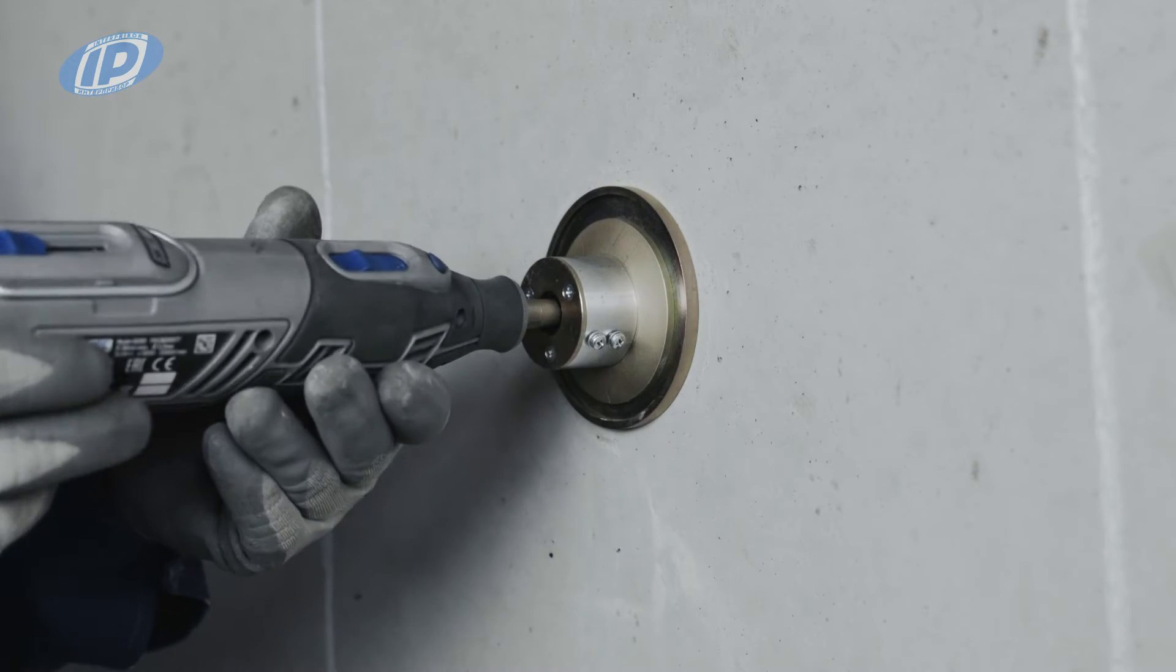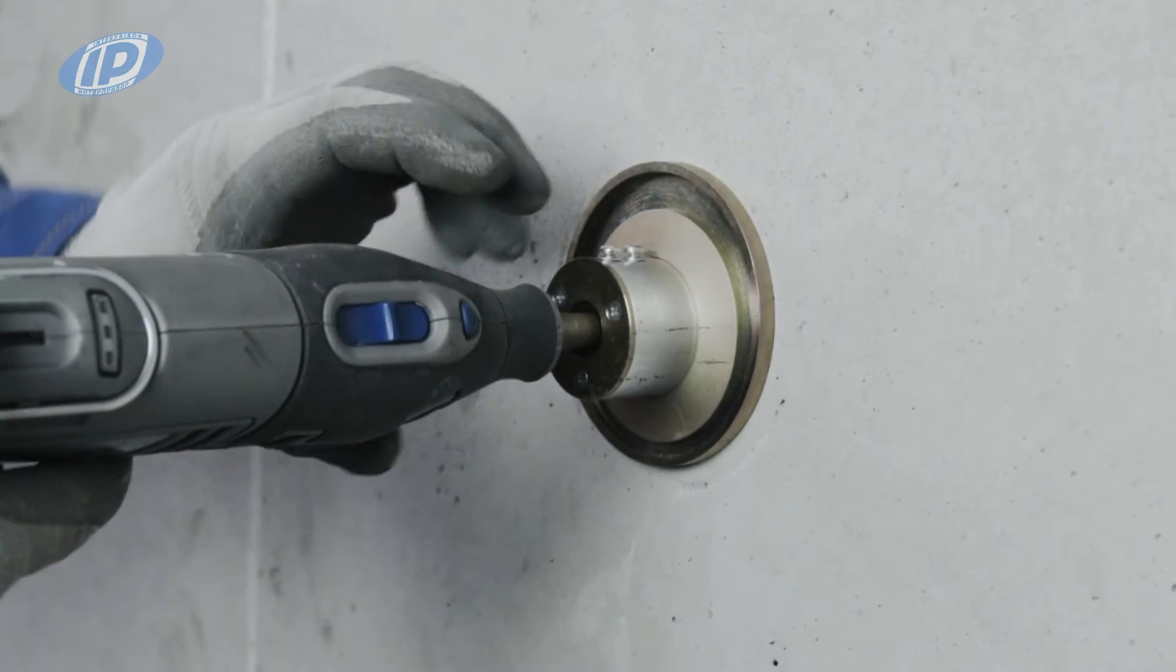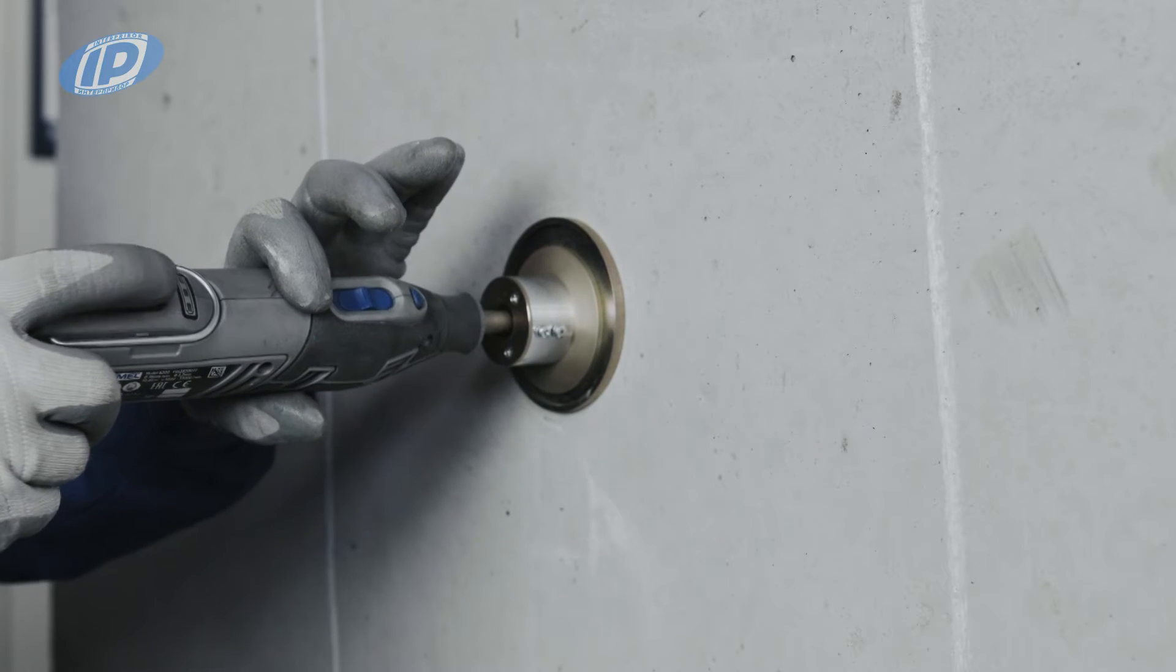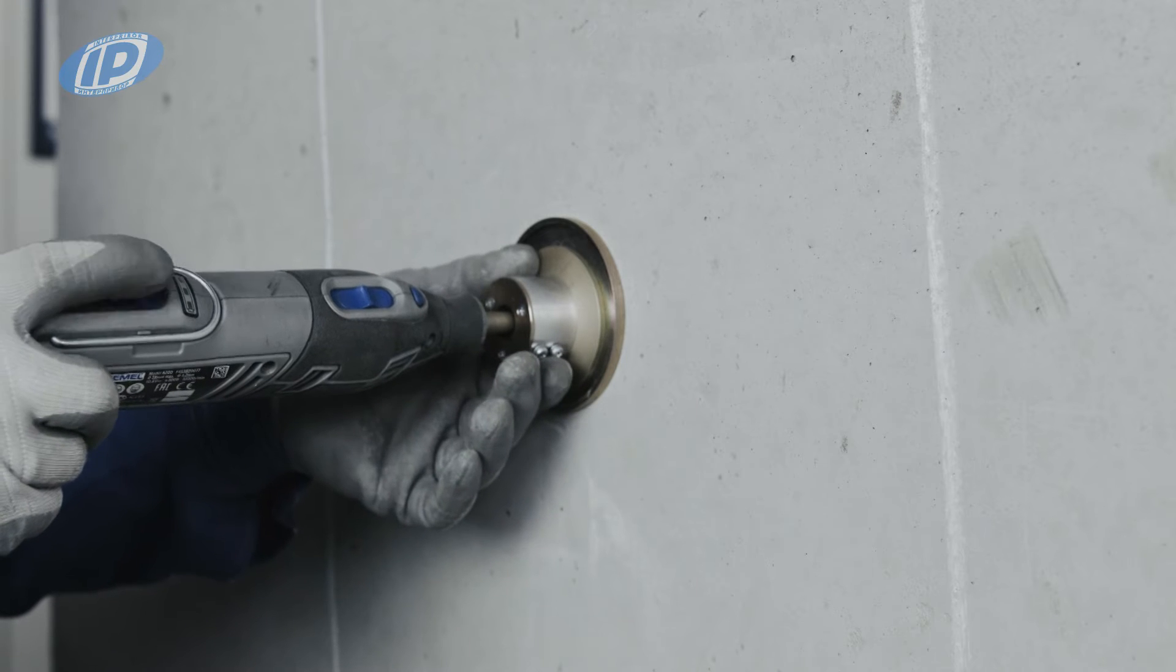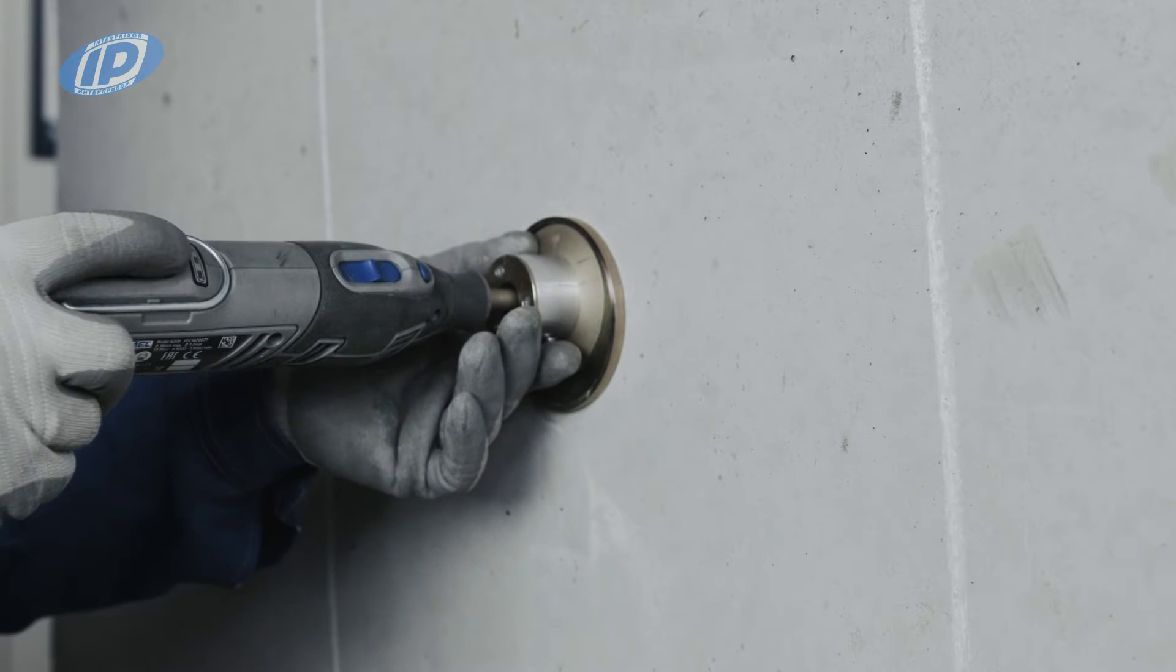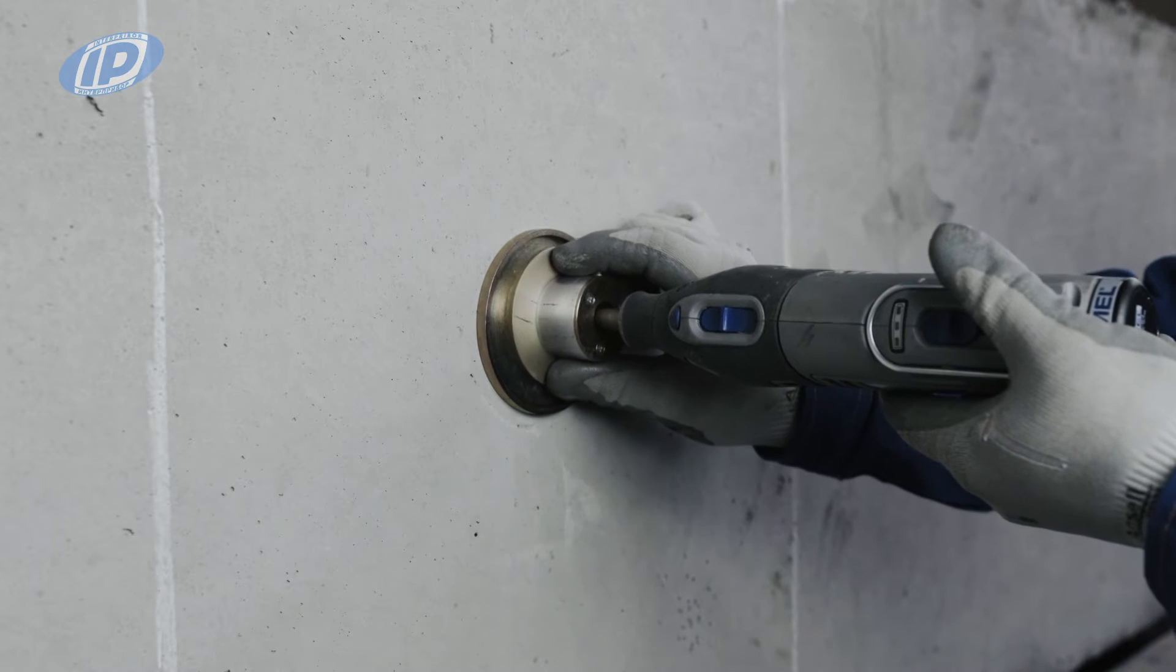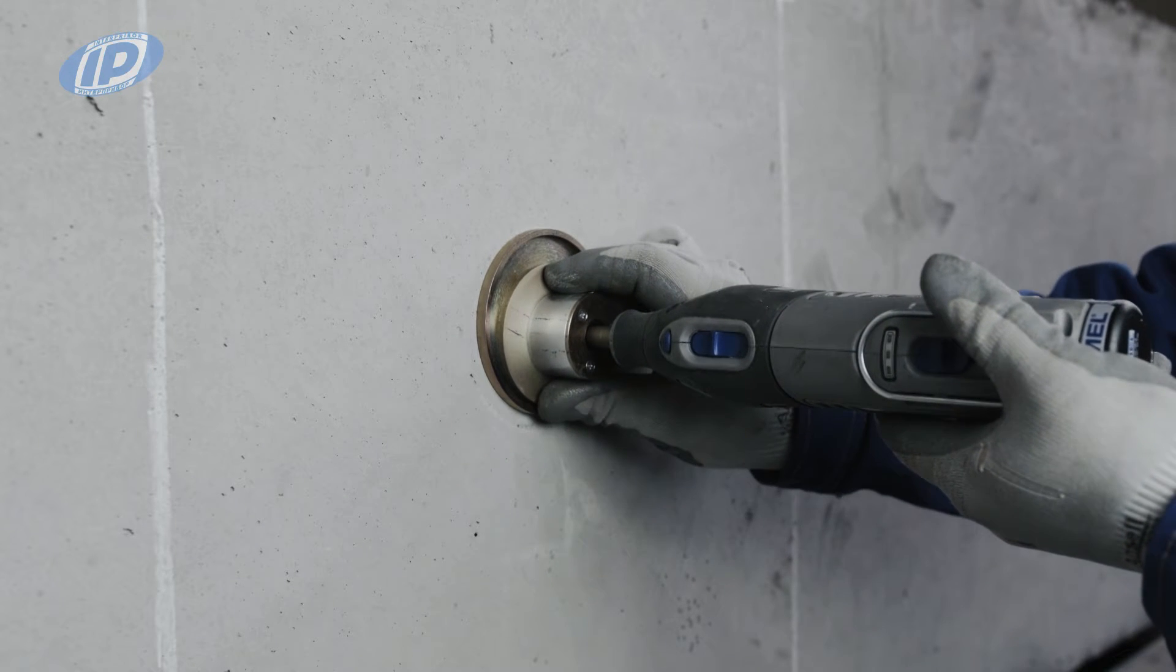Firmly press the support ring onto the concrete surface. Turn on the electric drive. Moving the slider, increase the speed to the maximum while pressing the support ring onto the concrete surface. Begin circular rotations in a strictly vertical clockwise direction until the groove is at the correct depth.